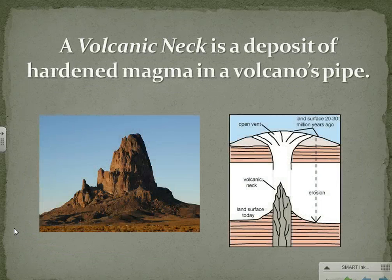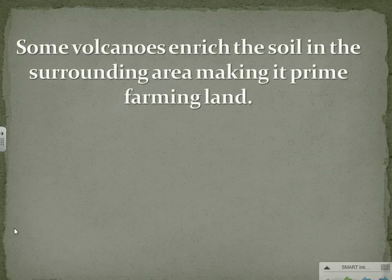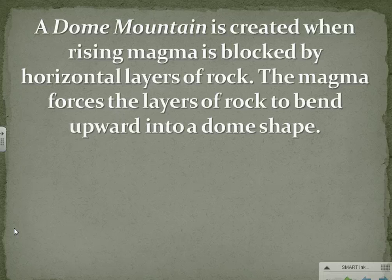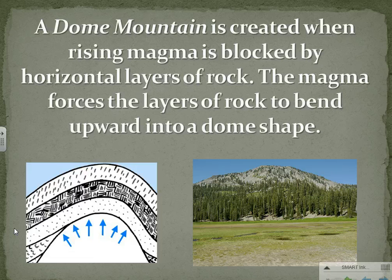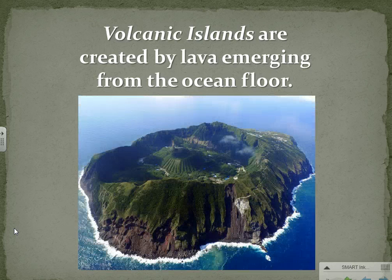A volcanic neck is a deposit of hardened magma in a volcano's pipe. A dome mountain is created when rising magma is blocked by horizontal layers of rock; the magma forces the layers of rock to bend upward into a dome shape. Volcanic islands are created by lava emerging from the ocean floor.